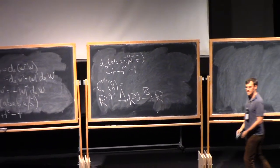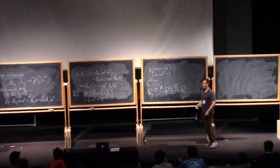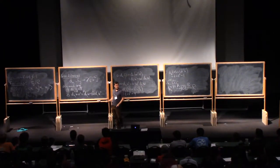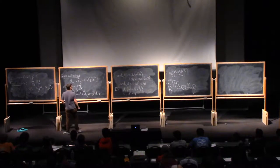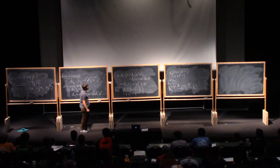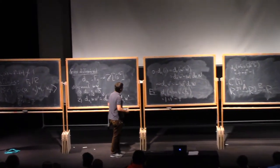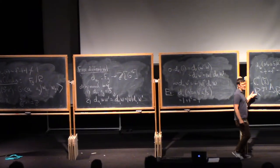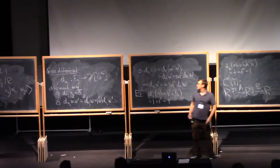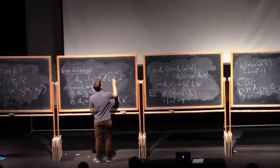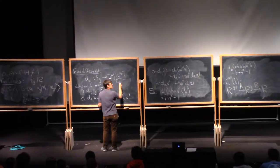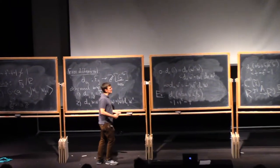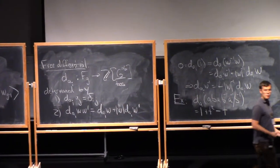Is there anything special about knot groups that allows us to define this differential? Excellent question. The only thing really special about knot groups is that there was no torsion. If instead I took the abelianization and divided it out by the torsion part to get a free abelian group, everything would work exactly the same, and I'd get what's called the multivariable Alexander polynomial.